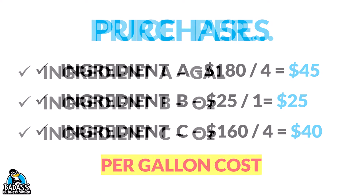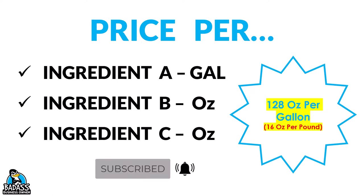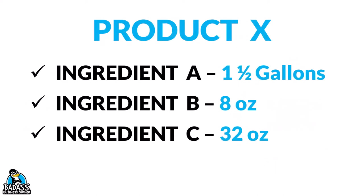Now that we know the gallon prices, we have to come back and look at how we assemble it. We don't use just gallons — we have to break it down by ounces for two of the ingredients. Keep in mind that in a liquid gallon there are 128 ounces. For those of you that have 16 in your head, that's because there are 16 ounces in a pound, but in a liquid gallon it's 128. So that's our magic number. Ingredient A had one and a half gallons, Ingredient B had eight ounces, and Ingredient C had 32 ounces.